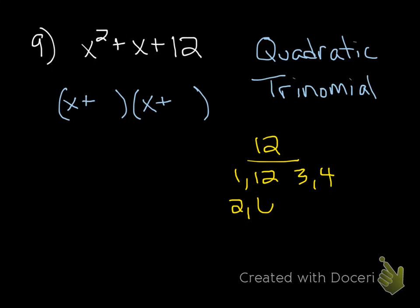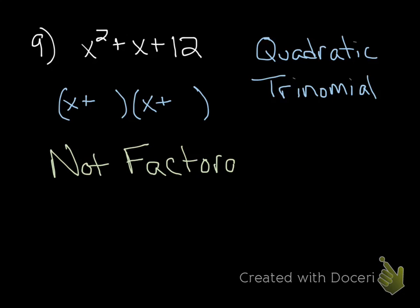Next I want to list out the factors of 12 to see what multiplies to that, and out of that group it doesn't look like any of them add to a positive 1. So in this case, this polynomial is not factorable, and that matches with letter I.